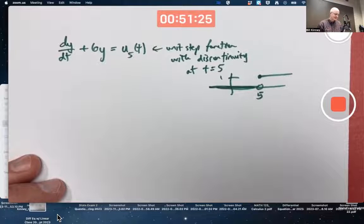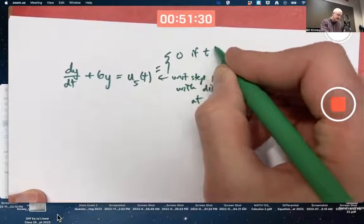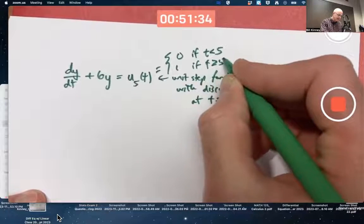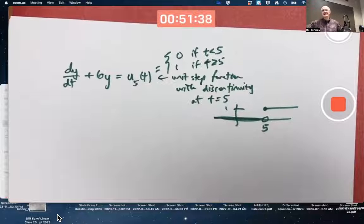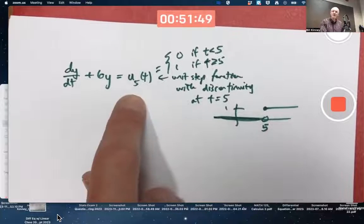Piecewise constant. If you had to write a formula for it, it would be a piecewise formula: 0 if t is less than 5, and 1 if t is greater than or equal to 5. It's got another name. It's also called the Heaviside function, in honor of somebody whose last name was actually Heaviside. They're the same function. That's our forcing function.